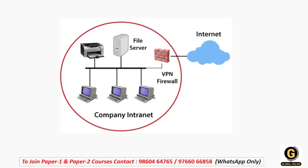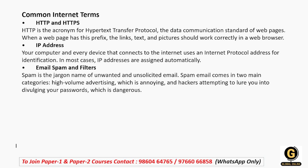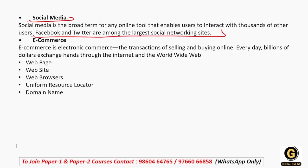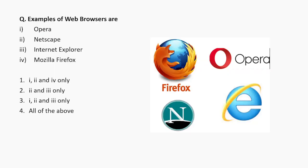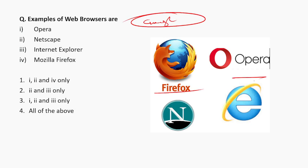Next topic है internet। Internet की मदद से एक जगह बैठकर पूरे world में कहीं भी file download कर सकते हैं। Common internet terms में HTTP और HTTPS आते हैं — Hypertext Transfer Protocol इसकी full form है। IP address हर computer का unique address होता है। Social media जैसे Facebook, Twitter, Instagram और e-commerce जैसे Amazon use करते हैं। Website क्या होती है — website is a collection of different web pages। Web browsers का example है Google Chrome जिसकी मदद से हम Google पर search कर सकते हैं।